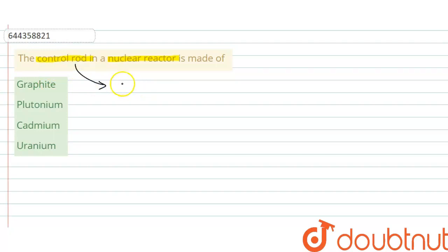Control rod is to absorb neutrons without themselves fissioning.